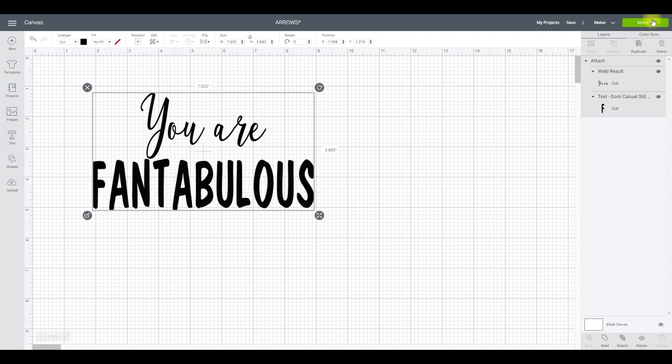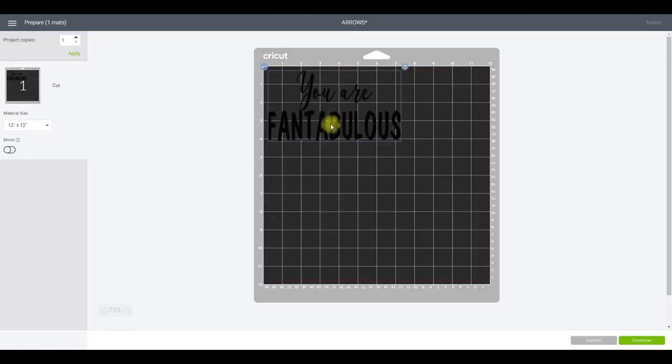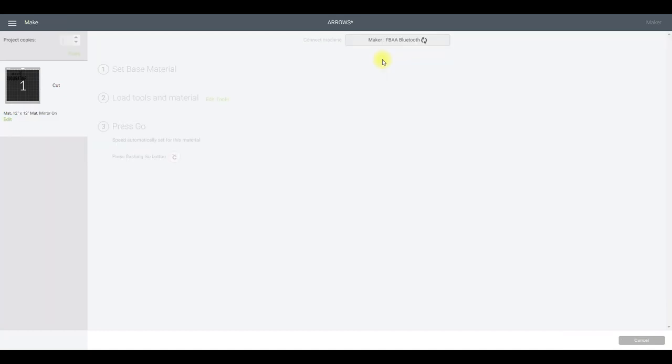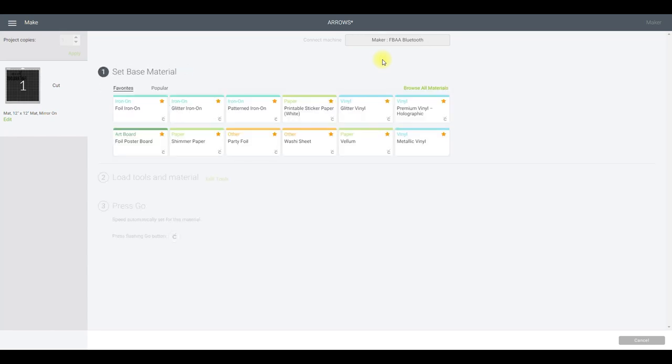Because we're using infusible ink sheets, and actually even with pens, you still need to mirror. So make sure when using infusible ink that you are turning that mirror on. I'm going to select my Maker. Now the sheets will work in any of the machines. So all the Explores, the Makers, and of course, the Joy. When it comes to the pens, there are separate pens for Explores and Makers, and then there are separate pens for the Joy. So the 30-pack is for all Explore models, including Airs, and the Maker. They will not fit in the Joy.